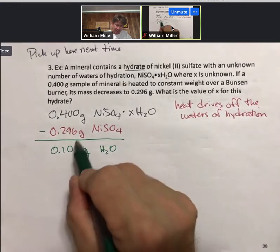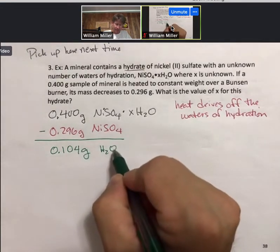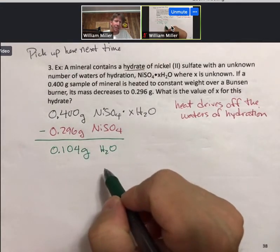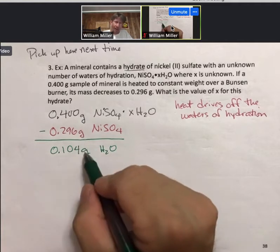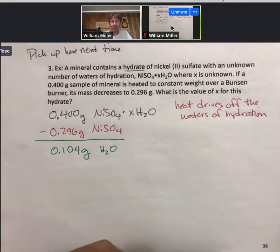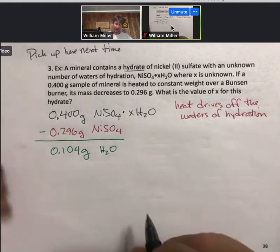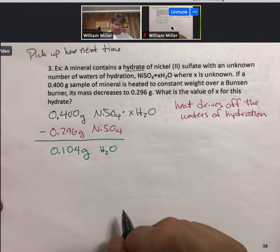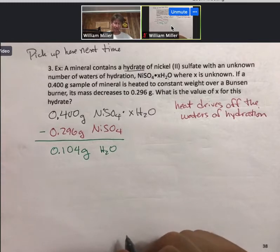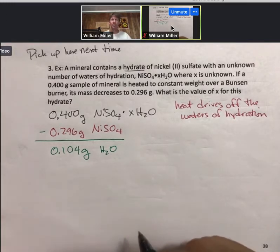We should get 0.104 grams of H₂O. Now that we have grams of each of these, it's like the problems we ended up with last time: take grams, turn them into moles, find a small whole number ratio between them, and that will help us find x.